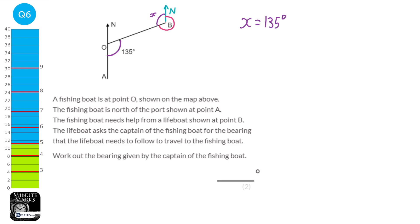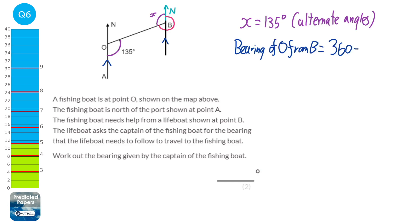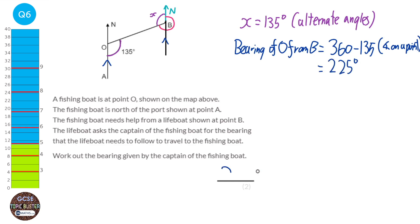The reason is that we have a set of parallel lines, and we have Z angles — alternate angles. Always show the reasons to the examiner. To find the bearing of O from B, we do 360 take away 135. The reason is that angles on a point add up to 360. So 360 minus 135 equals 225. Our answer is 225 degrees.